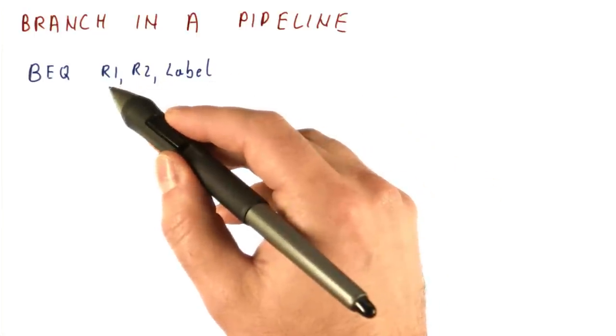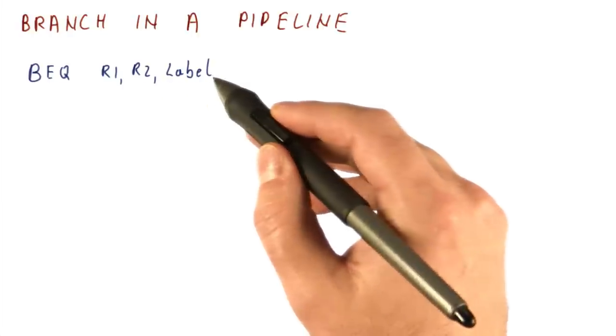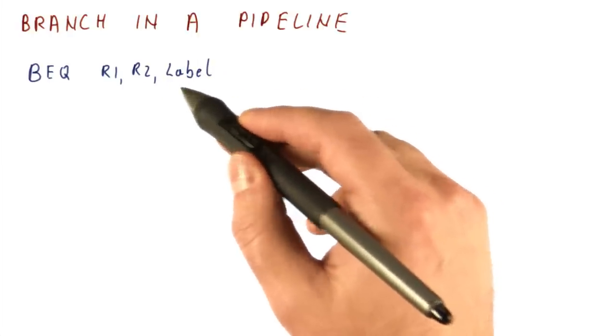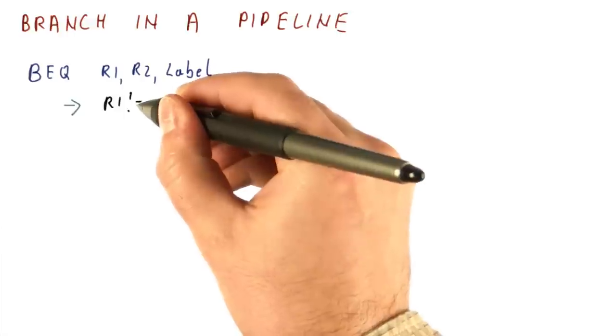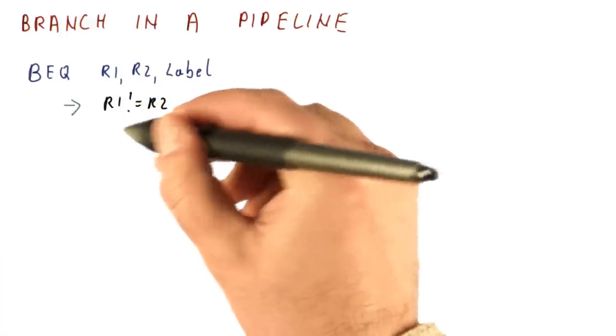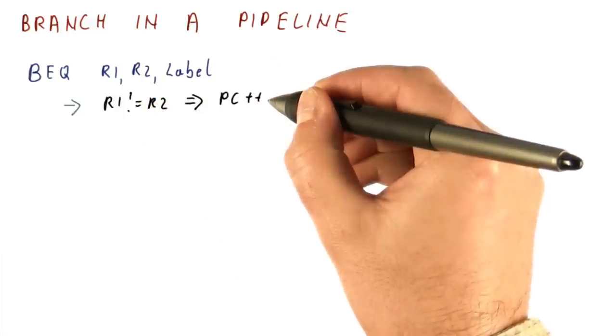So that the branch, if R1 and R2 are equal, will add the immediate operand to the PC that it computed for the next instruction. Now the problem with branches is that if the branch condition is not met, just increment the PC.